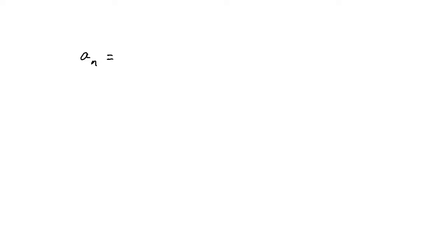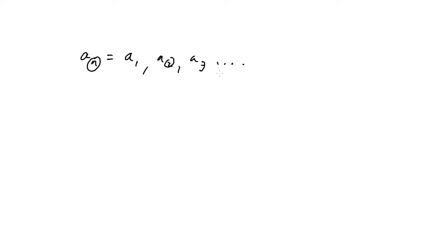Let's take a look at sequences. A sequence is just a list of terms. If we have a sequence written as a_sub_n, the first term is a_sub_1, found by plugging in 1 for n. Then we have a_sub_1, a_sub_2, a_sub_3, and so on. A_sub_2 is the second term when we plug in 2 for n, a_sub_3 is the third term when we plug in 3, and so forth.